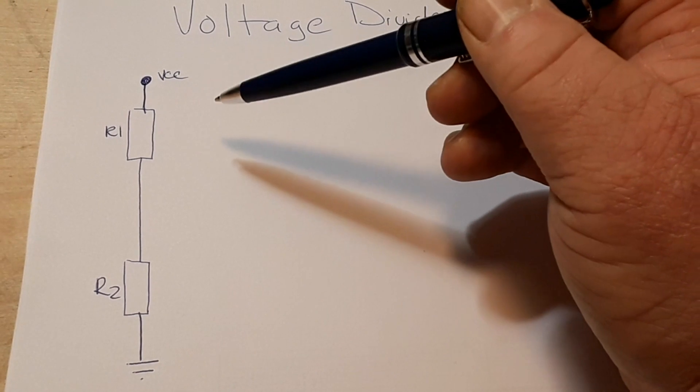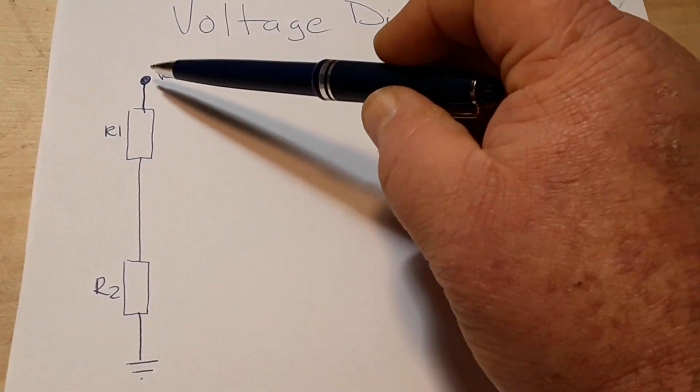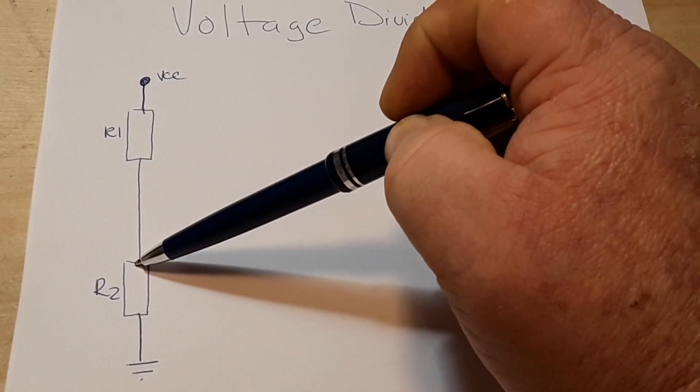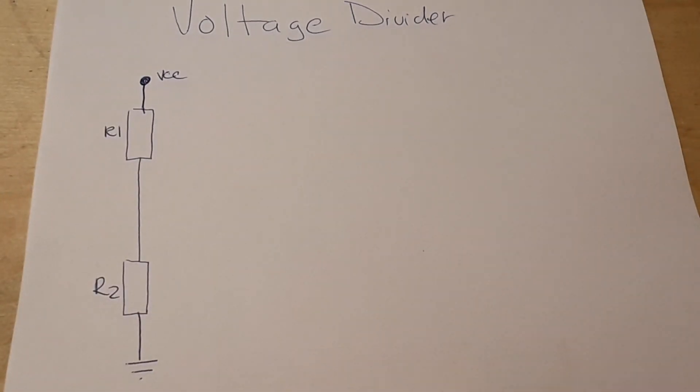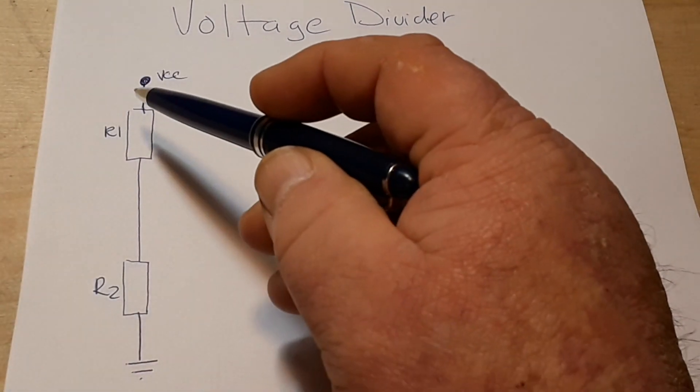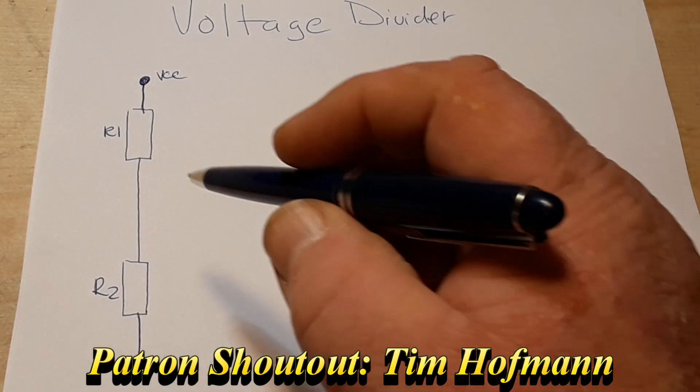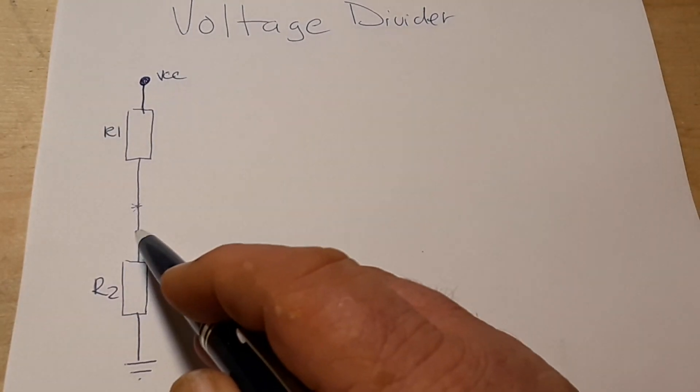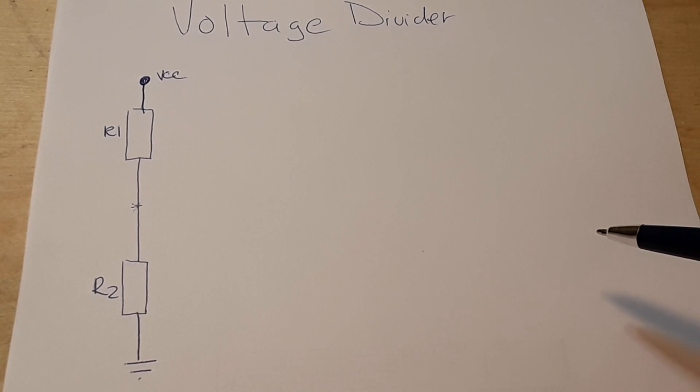So, this is a basic two resistor voltage divider. We have VCC, it goes directly to R1. R1 is connected to R2, which is connected to ground. Now, if these are the same, well then it's pretty easy. This point here, this node will be one half of VCC. But what if they're not the same?